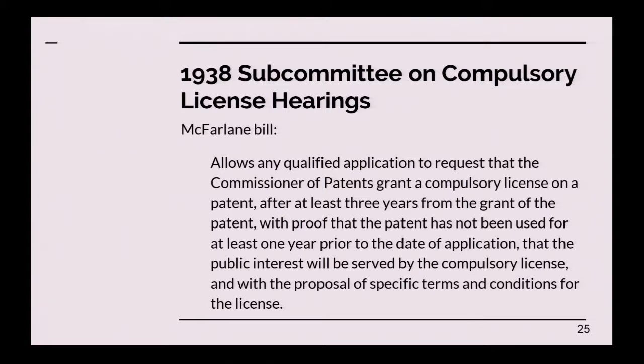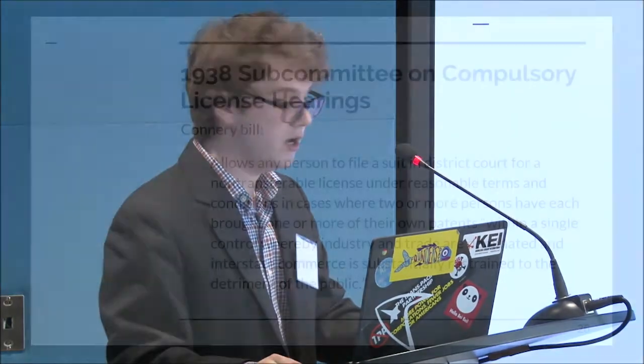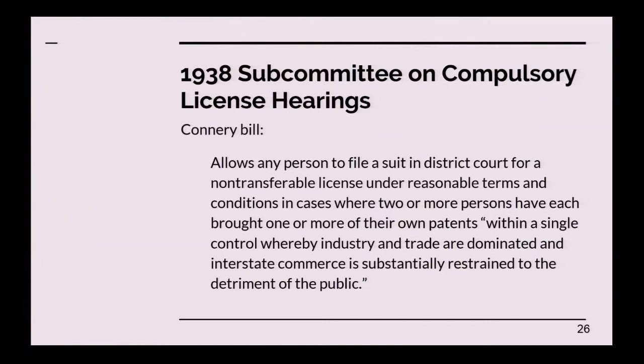Since this was in the midst of the Depression, employment was also discussed — they thought that compulsory licensing would let small manufacturers get more jobs into the economy. McFarlane's bill would have allowed any qualified applicant to request the Commissioner of Patents grant a compulsory license after at least three years, with proof that it had not been used for at least one year, that the public interest would be served, and the applicant would have to propose specific terms and conditions. The Connery bill would have allowed any person to file suit in district court for a non-transferable license under reasonable terms when two or more persons had brought their patents into a single control or trust, whereby industry and trade are dominated and interstate commerce is substantially restrained to the detriment of the public.